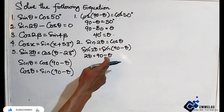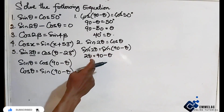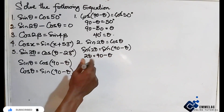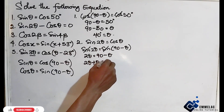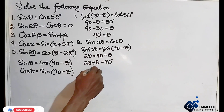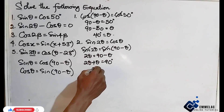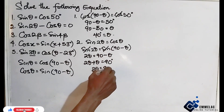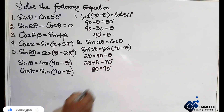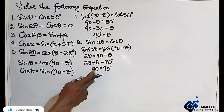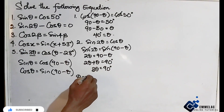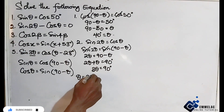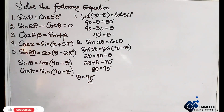Bringing negative theta to the left-hand side, we have 2 theta plus theta equals 90 degrees, so 3 theta equals 90 degrees. Dividing both sides by 3, we get theta equals 30 degrees.